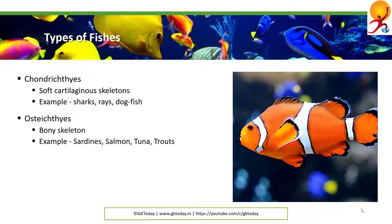Osteichthyes: these are fishes with bony skeletons. Examples are tuna, sardines, catfish, salmon, trout, thorns, etc.